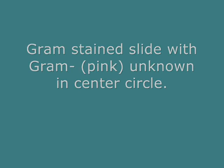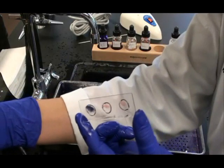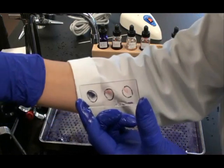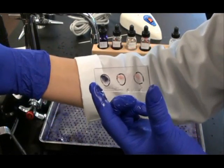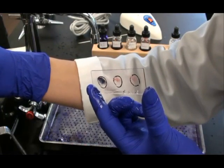The slide I just prepared has a gram negative unknown. I see my positive control on the left, my negative control on the right, and my unknown in the center is pink like my negative control.